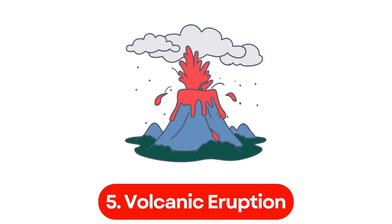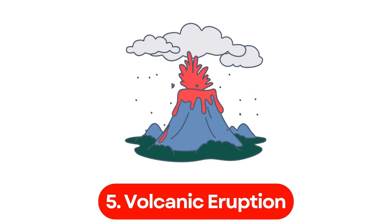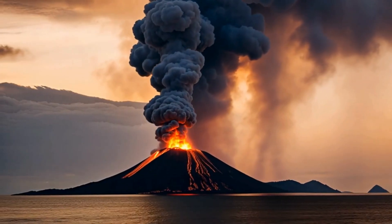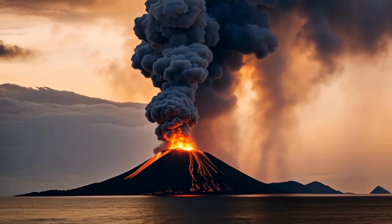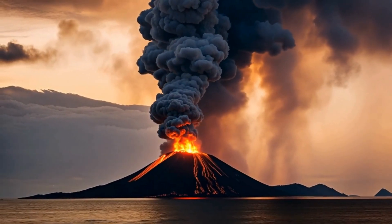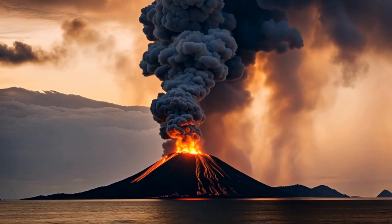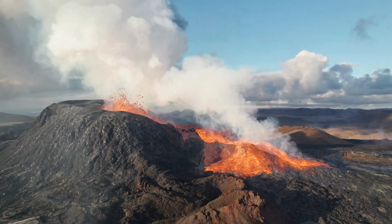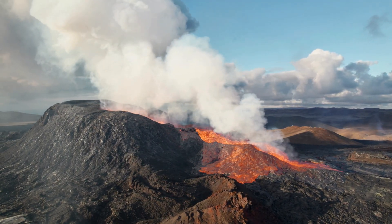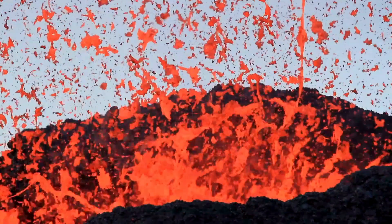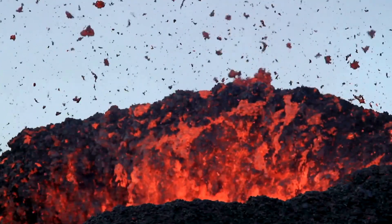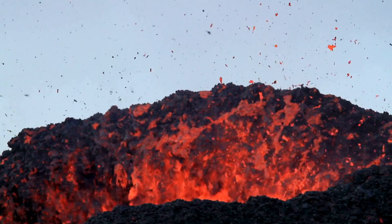Number 5. Volcanic eruption. A volcanic eruption occurs when magma from the Earth's interior bursts through the surface. It releases ash, lava, and gases, which can destroy towns, cause fires, and trigger respiratory issues.